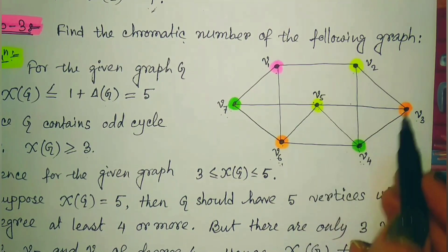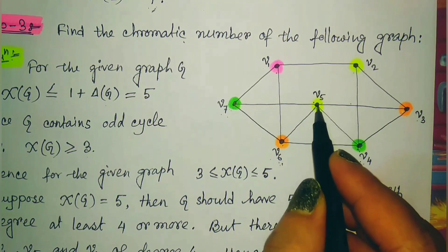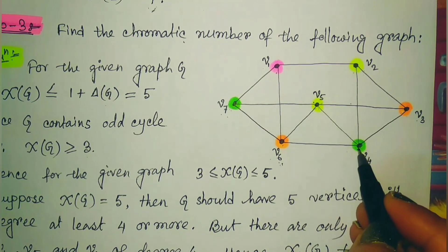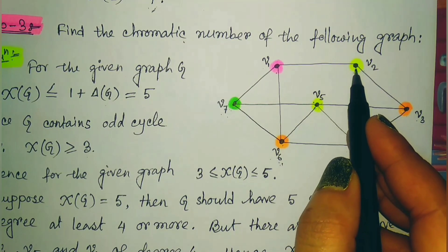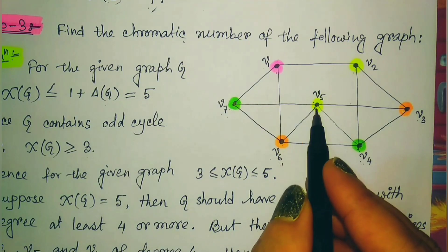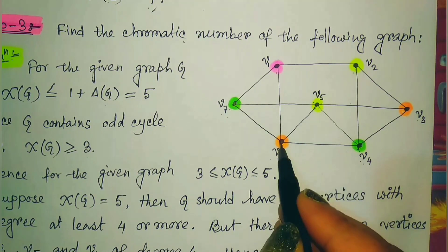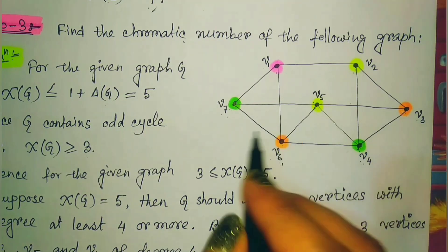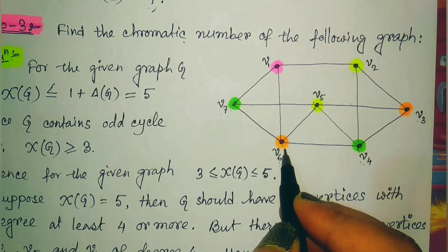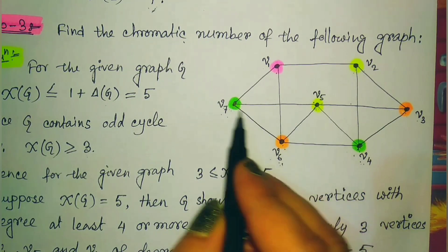Considering vertex v5, it is adjacent to v3 and v4, so its color must differ from those two; it can take the same color as v2. Vertex v6 is adjacent to v5 and v4, so it should have a different color from both and can take the same color as v3. Vertex v7 is adjacent to v5 and v6, so it takes the color of v4.